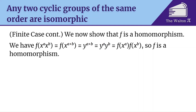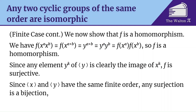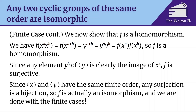Now we need to show that f is bijective. Since every element y to the k is clearly the image of x to the k, f is surjective — to get y to the k, we start with x to the k. Since both groups have the same finite order, every surjection is a bijection, so f is an isomorphism. That means we are done with the finite case.